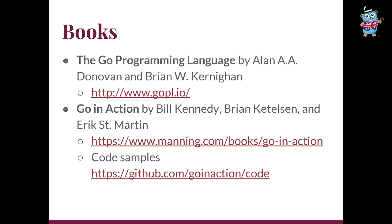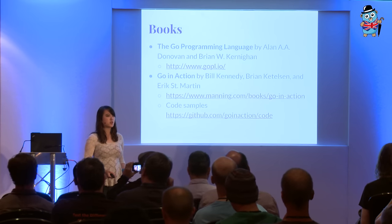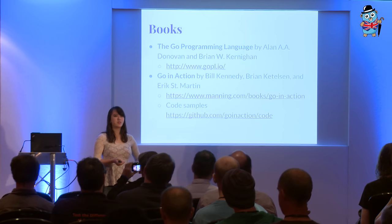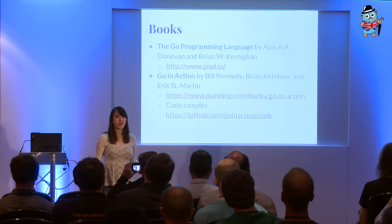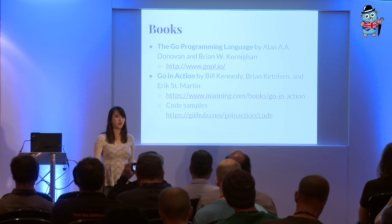There are also books. There's The Go Programming Language by Donovan and Kernighan — some of you may have heard of Kernighan, he wrote the C programming book and was one of the authors of C. And then there's also Go in Action by Bill Kennedy, Brian Kettelson, and Eric St. Martin. One of the great things about that book is there's also a GitHub page, so if you see some code and want to put some print statements in to see what's actually happening, you can pull it down and follow along.